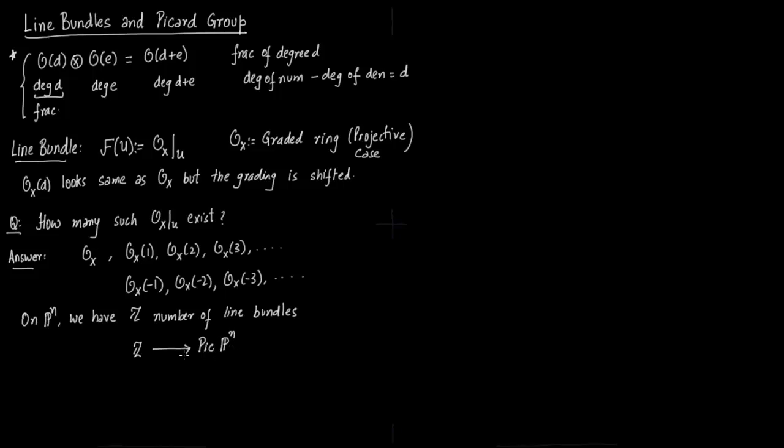We have a map from integers to Pic of PN and you can see you take an integer, take it to O of T and we still have to make sense of these OX(-1), OX(-2), OX(-3) and so on.